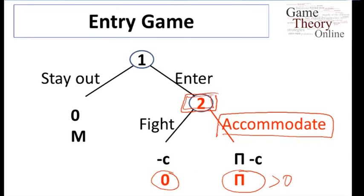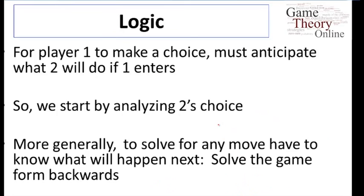When we back up the tree, now when player one makes a choice, they can anticipate what two is going to do if one enters. We started by analyzing two's choice and more generally, we'll always be just looking down the tree, solving it backwards, and having players anticipate what's going to come next.